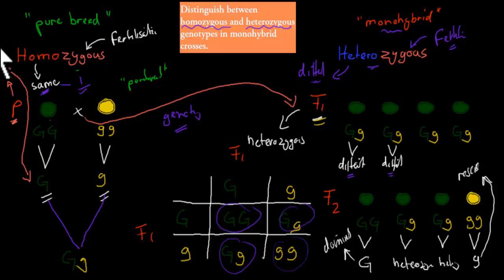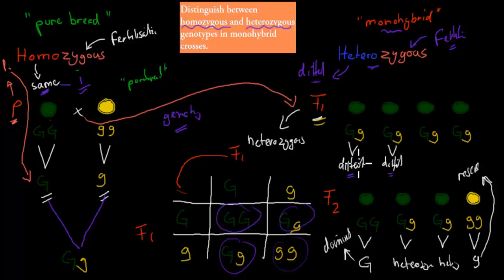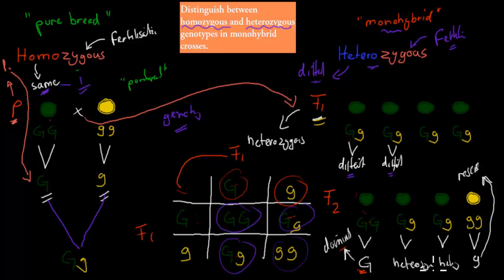And then when we crossed the F1 generation with each other, some were heterozygous and some were homozygous. One had both big G alleles come together to make a dominant homozygous plant — the green one. Two got one small g and one big G, making heterozygous plants. And one got both small g's to make a double small g — the recessive homozygous plant. So we ended up with two homozygous and two heterozygous.